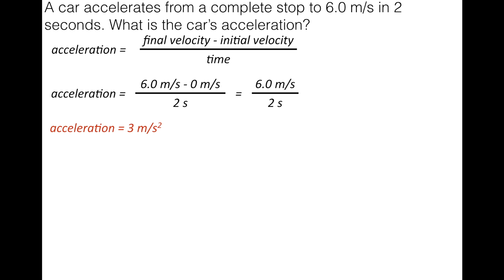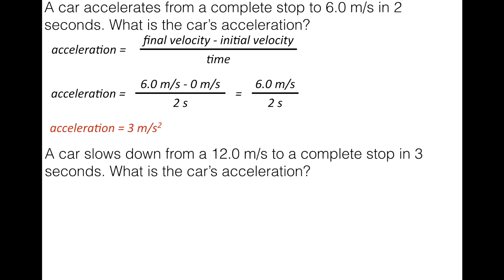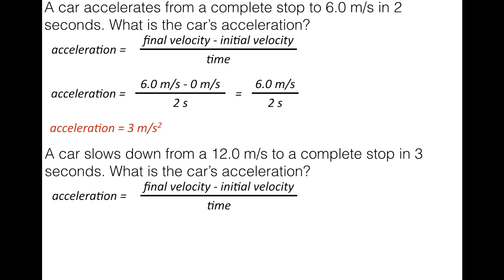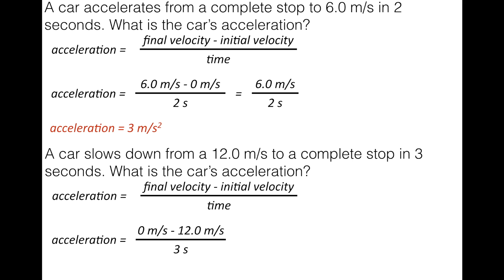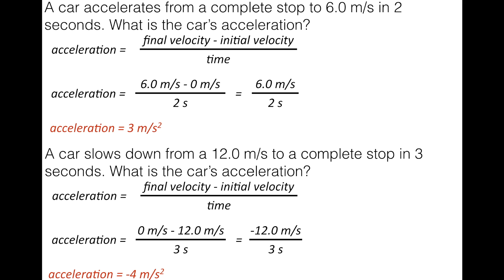Now let's look at a deceleration example. A car slows from 12 meters per second to a complete stop in 3 seconds. Using the same formula: final velocity is 0 m/s, initial is 12 m/s, time is 3 seconds. So: (0 - 12) / 3 = -12 / 3.